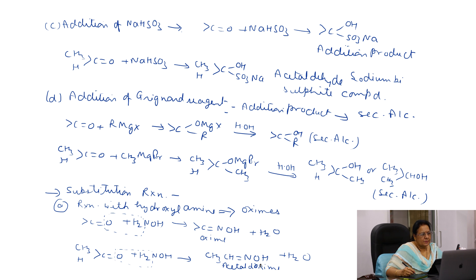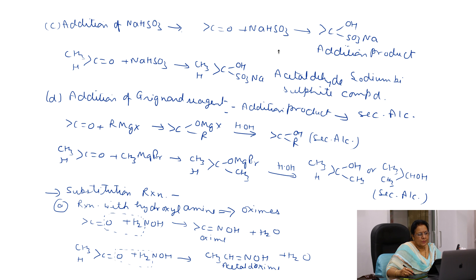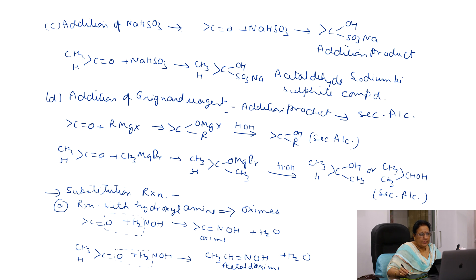The next property is addition of sodium bisulfite. When the carbonyl group undergoes addition with NaHSO3 (sodium bisulfite), then a COHSO3Na addition product is formed. In the case of acetaldehyde, the acetaldehyde sodium bisulfite compound is formed.